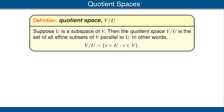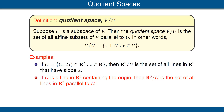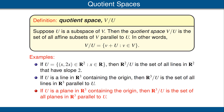Now we are ready to define quotient spaces. Suppose U is a subspace of our vector space V. Then the quotient space V divided by U is the set of all affine subsets of V parallel to U. For example, in R² with U being the line through the origin with slope 2, R²/U is the set of all lines in R² with slope 2. In R³ with U a line through the origin, R³/U is the set of all lines in R³ parallel to that line. With U a plane in R³ through the origin, R³/U is the set of all planes in R³ parallel to U.